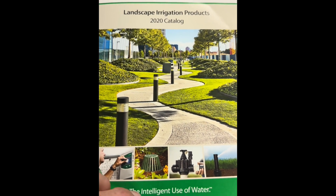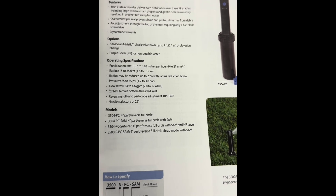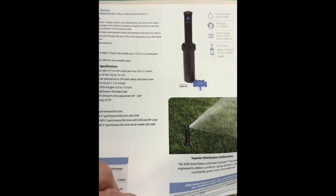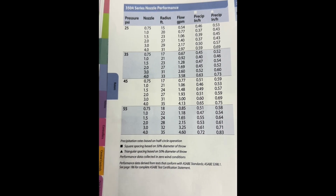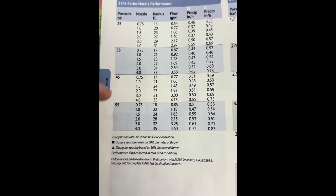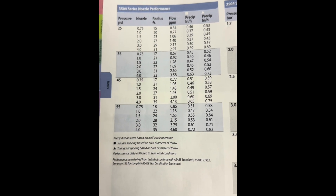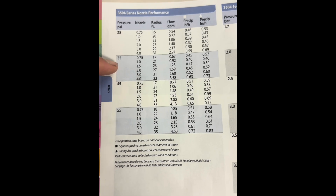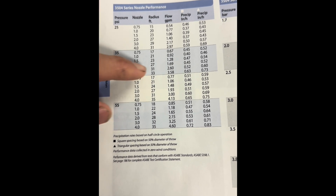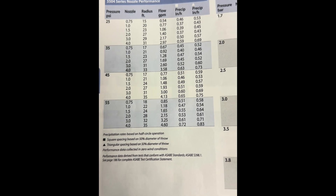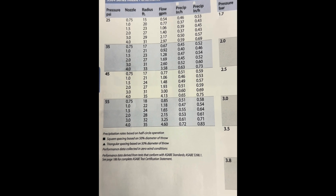Now that we know our gallons per minute, we're going to look at the sprinkler heads we're going to use. This is a Rain Bird catalog. One of the sprinklers we're going to use is this medium-sized rotor — it's the 3500. These are great for most applications. Over here in the catalog they have a nozzle performance chart, with pressure on the left-hand side, the nozzle you're going to use, how far it shoots, the flow rate, and your precipitation rate.